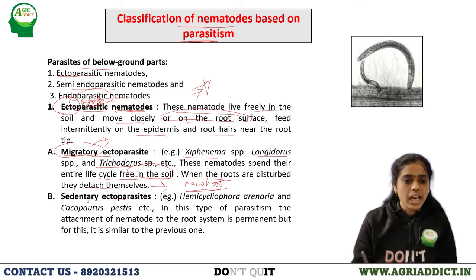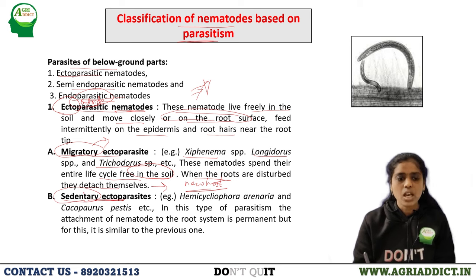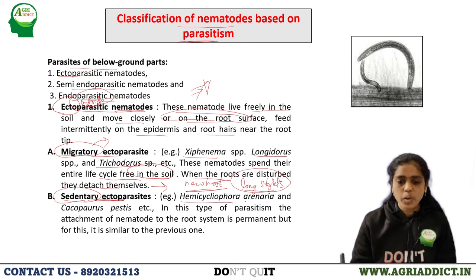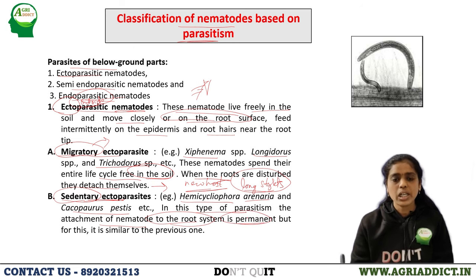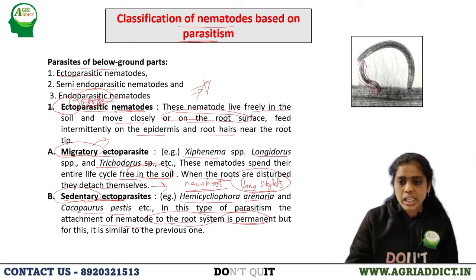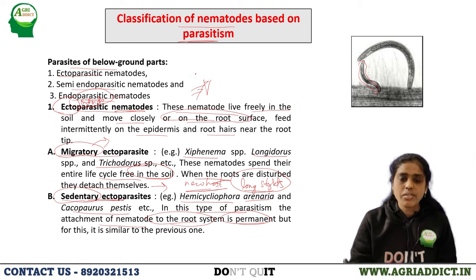Sedentary ectoparasites stay at one place and possess long stylets to maintain an efficient relationship with the plant body from outside the plant tissue. Examples are Hemicriconemoides urinator and Cacoparous pestis. The attachment of the nematode to the root system is permanent, establishing a permanent feeding relationship with the host plant.